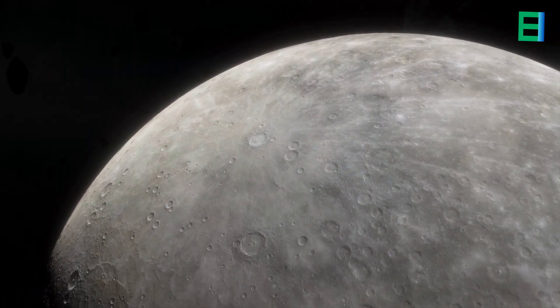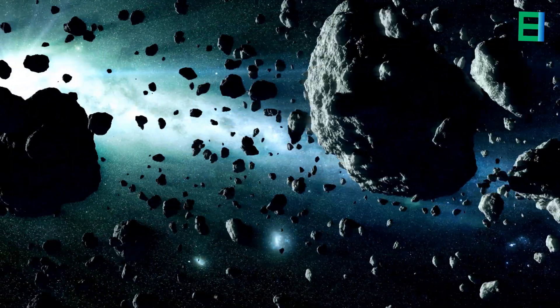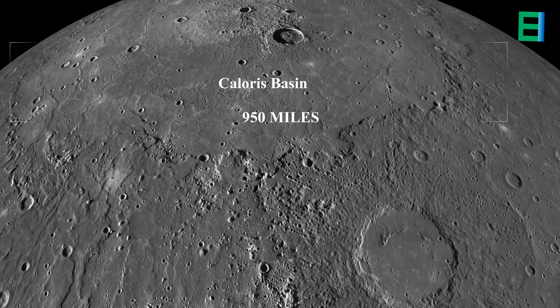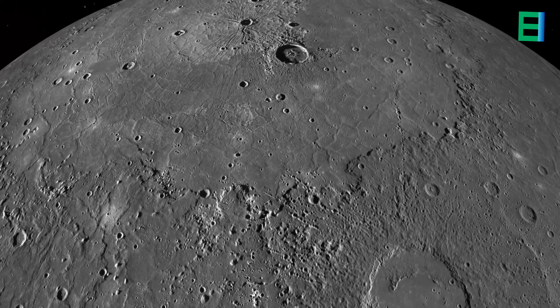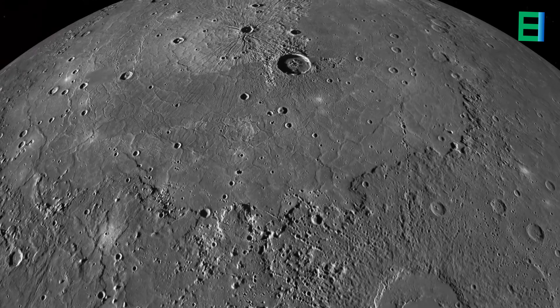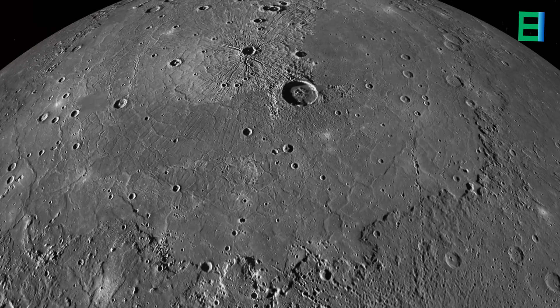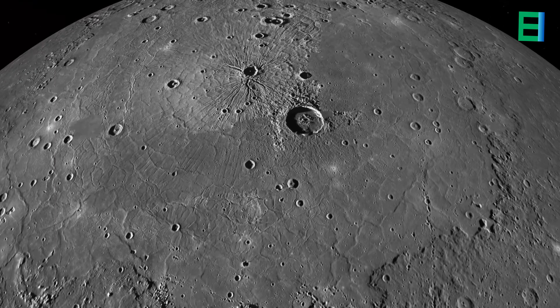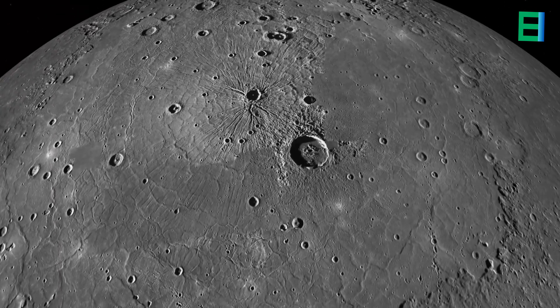These impact craters come in various sizes, from small indentations to colossal structures that stretch for dozens of miles. The largest among them, the Caloris Basin, spans hundreds of miles in diameter and is surrounded by concentric rings. These impact basins provide valuable insights into the geological evolution of Mercury. In addition to craters, Mercury also showcases extensive plains known as maria.